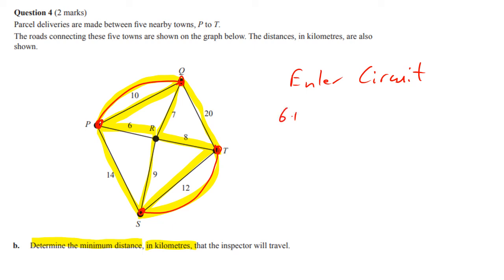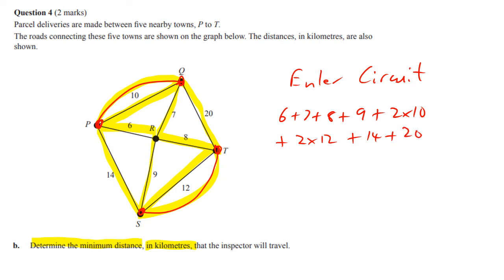So the total is 6 + 7 + 8 + 9 + 2×10 (two edges of 10) + 2×12 + 14 + 20. If you add all that up, you get 108 kilometres, and that's your answer.